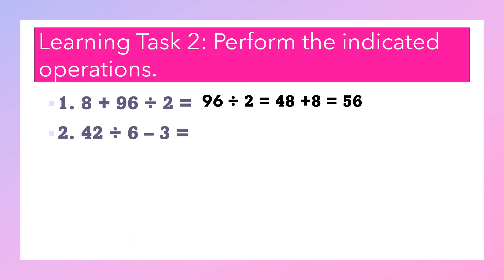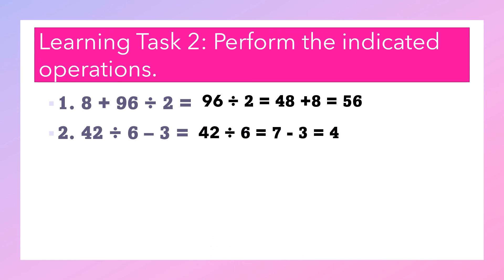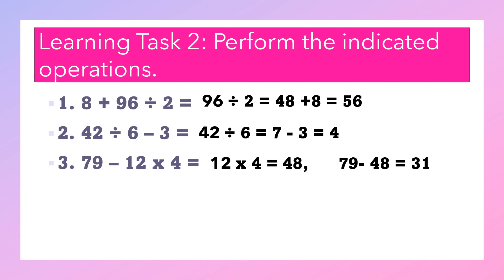Number two: 42 divided by 6 minus 3. MDAS rule — divide first, then subtract. 42 divided by 6 equals 7; 7 minus 3 equals 4. Number three: 79 minus 12 times 4. We need to multiply first. 12 times 4 equals 48; then 79 minus 48 equals 31.